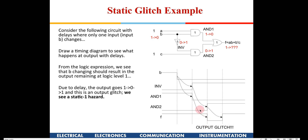This glitch happens because of unequal propagation delays. B reaches the first AND gate directly with no delay, but the same B reaches the second AND gate with one additional propagation delay introduced by the inverter (NOT gate). This unequal propagation delay is the cause of the glitch.